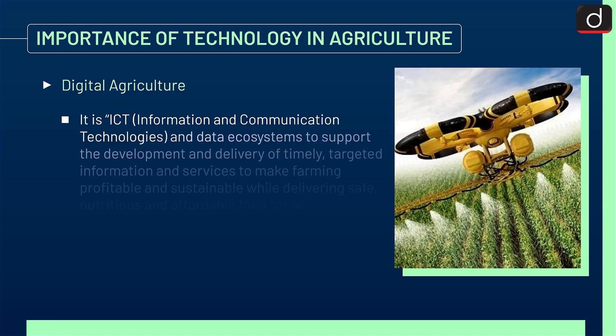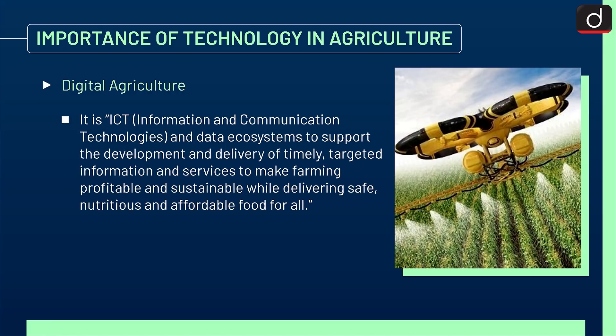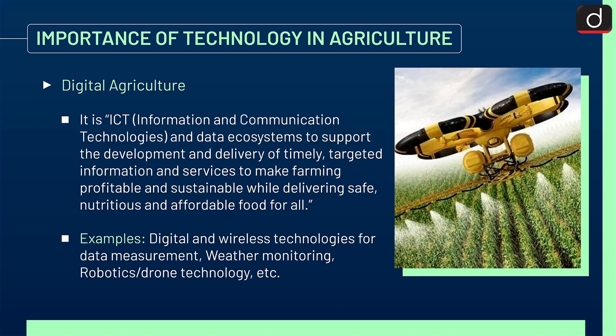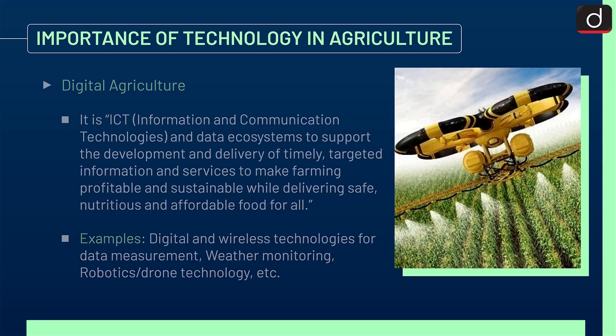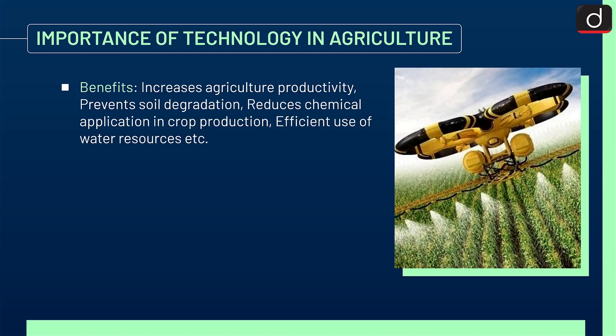Digital agriculture uses ICT — Information and Communication Technologies — and data ecosystems to support the development and delivery of timely, targeted information and services, making farming profitable and sustainable while delivering safe, nutritious, and affordable food for all. Examples include digital and wireless technologies for data measurement, weather monitoring, robotics, and drone technology. Benefits include increased agriculture productivity, prevention of soil degradation, reduced chemical application in crop production, and efficient use of water resources.